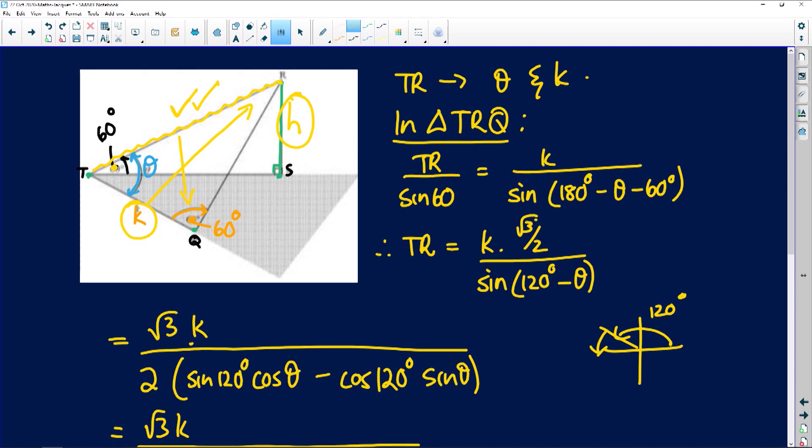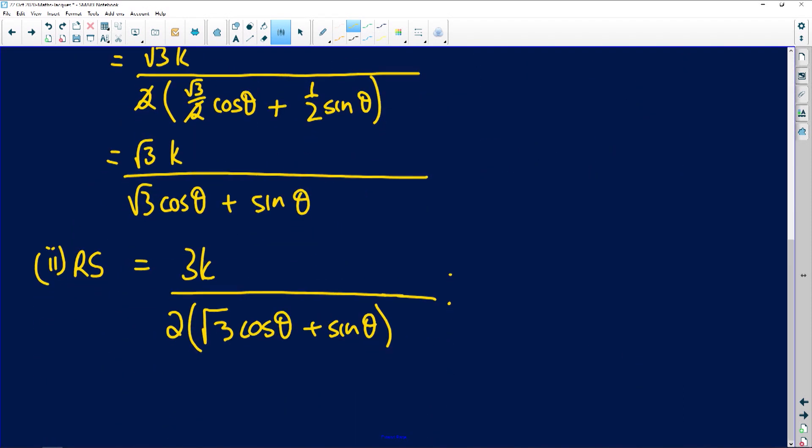So let's quickly go for that. The sine of 60 in that triangle, the sine of 60 is equal to RS over TR. So what is RS? RS will be the sine of 60 which is root 3 over 2 times TR.